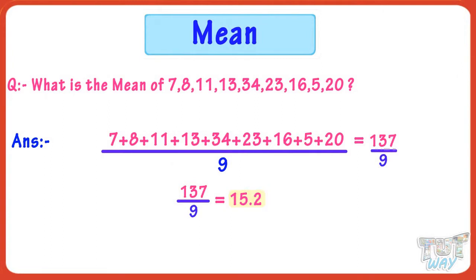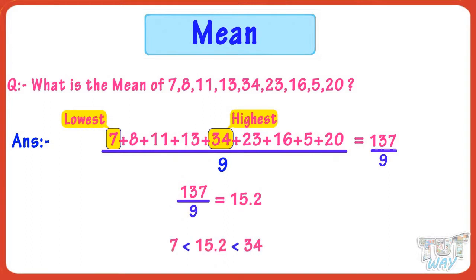So the mean of these numbers is 15.2. Now let's see what that means. Does 15.2 lie between the highest and lowest numbers in the list? Yes, 15.2 is between the highest and the lowest numbers in the list — it's an average number.